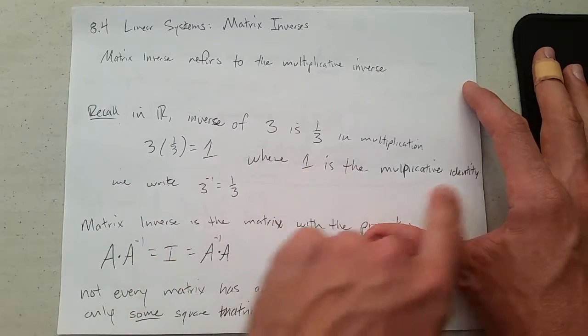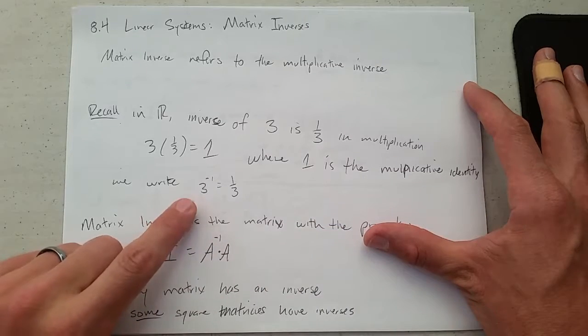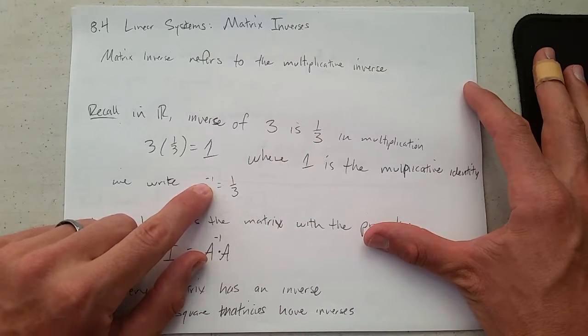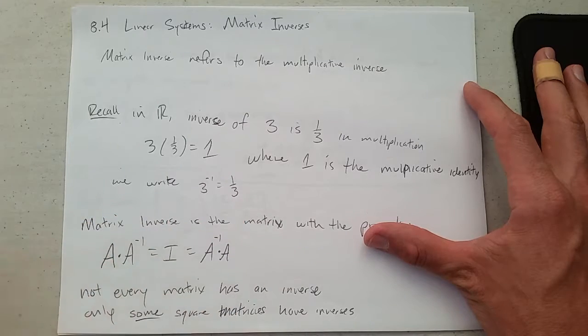And 1 is what we call the multiplicative identity. We write the inverse as 3 to the negative first power, which of course means the reciprocal, or the inverse, of one-third.